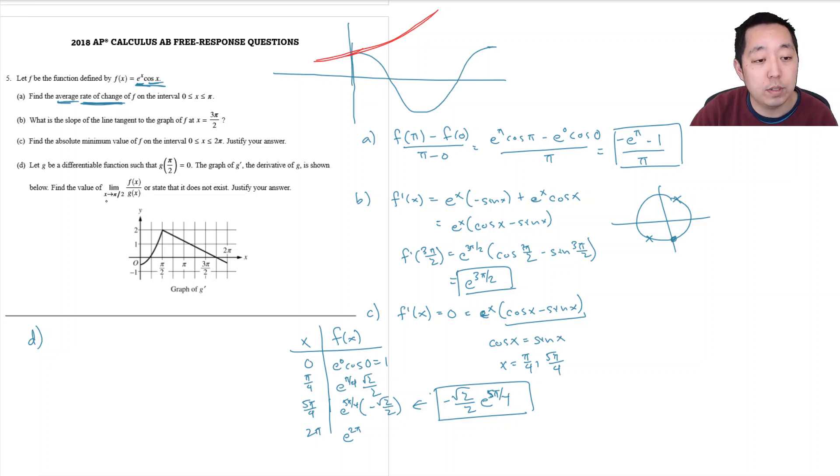So first of all, what you usually want to do is just plug it in first. g of pi over 2 is 0. And then f, what's at pi over 2, I also have 0. So the limit of x going to pi over 2, f of x over g of x. When I plug in f of pi over 2 over g of pi over 2, what I get is 0 over 0. That's in determinant form.